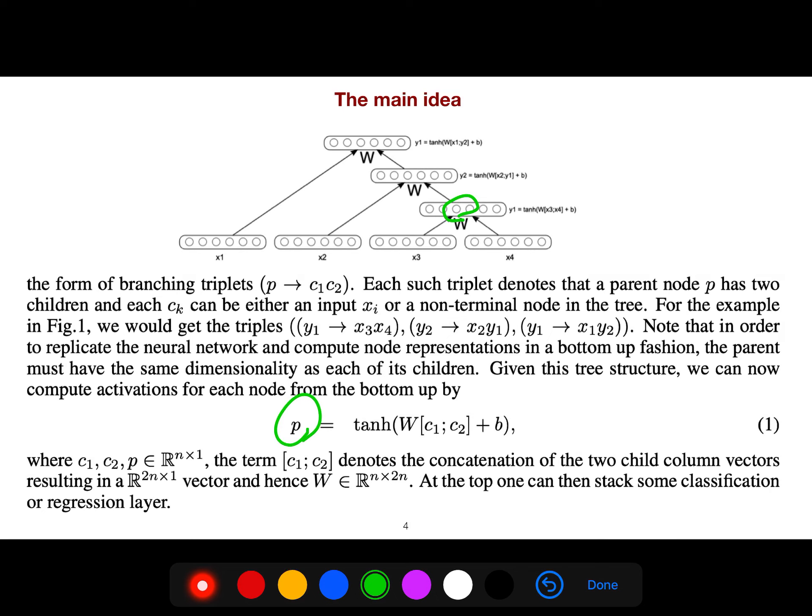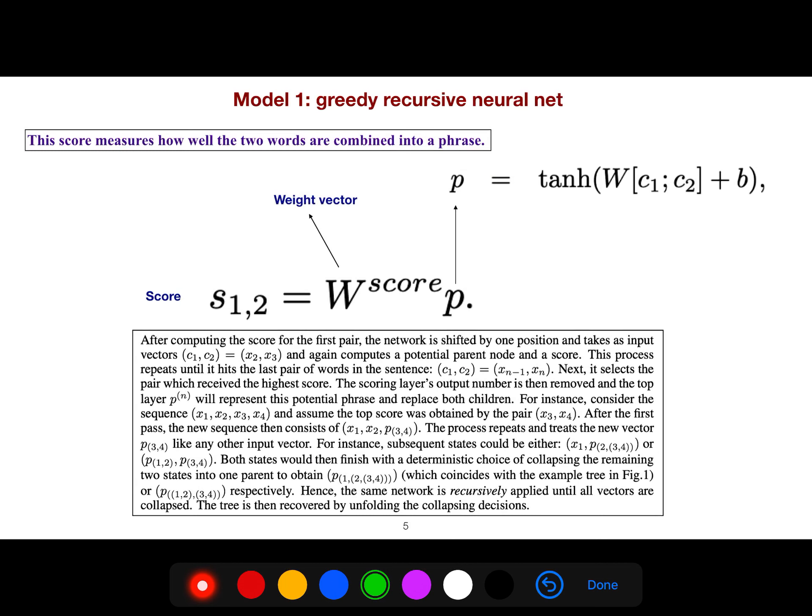So we concatenate, for example, C1 and C2, that here is X3 and X4, we concatenate. We multiply it with a vector, W, weight W, and plus a bias. And then we have an activation tangent, tanh. And so we have a vector, P. If you just dot product it with W score, we get a scalar.